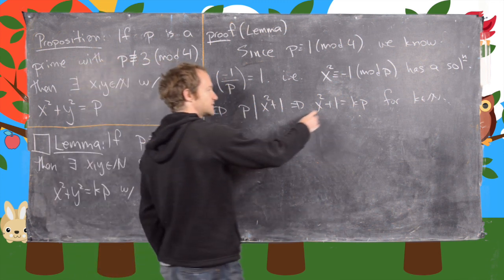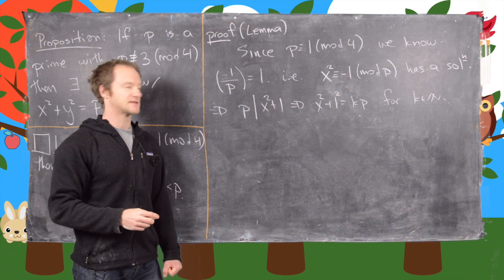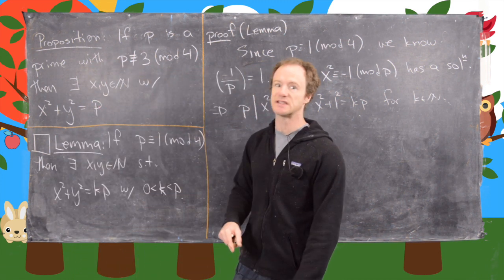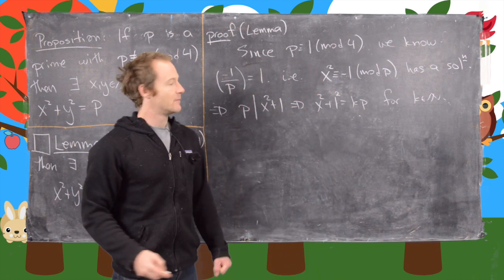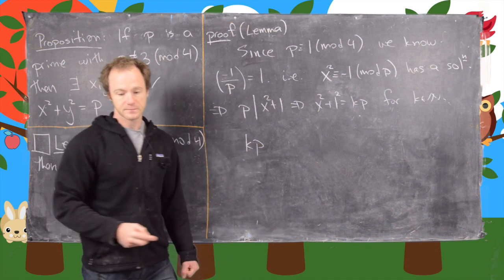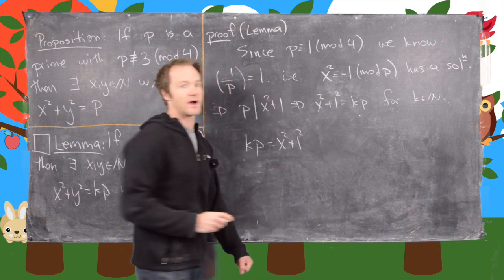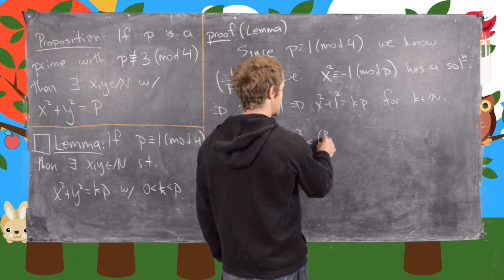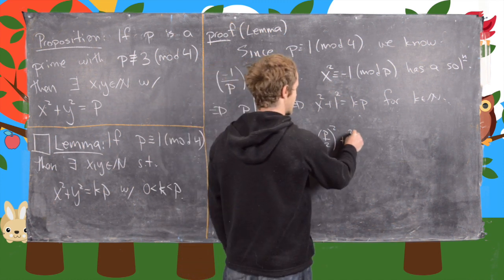Notice we can just put a squared there, and now we have kp equals x squared plus 1 squared. Now we're almost there — we just need the inequality in order to finish the proof of this lemma, and that comes pretty easily. We have kp is equal to x squared plus 1 squared, but that's less than (p/2) squared plus 1 squared.